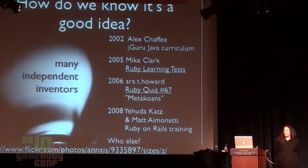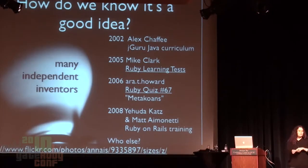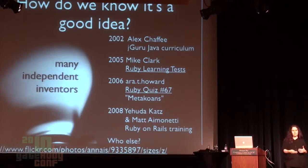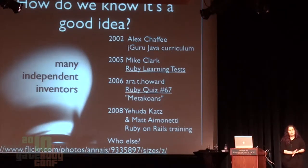So how do we know this is a good idea? It turns out it has many independent inventors. When I first started teaching Ruby, I was signed up to teach a Ruby on Rails class and felt strongly it was important to teach testing. I sent some email out to some groups and the response I got was: that's a really bad idea. People said your students are going to get frustrated — testing is hard, and if people don't know how to program, they can't really learn how to test.